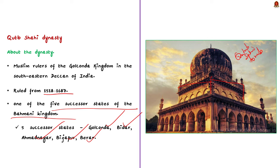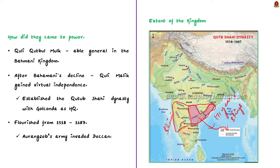Finally, the actual grave lies underground below the ornate grave in the main hall, and the internal ceiling of the dome is painted with the motifs of those times. These are the unique features of Qutb Shahi architecture. To summarize: the dynasty ruled from 1518 to 1687 with Golconda as their capital.